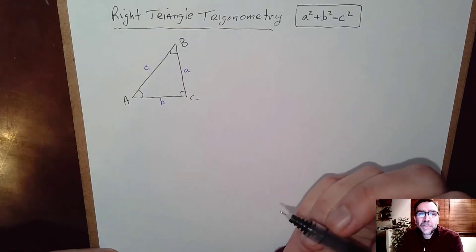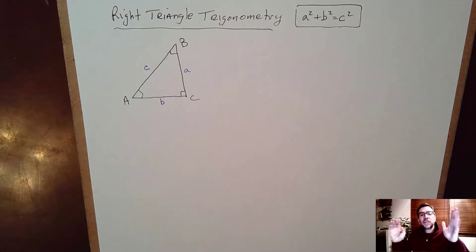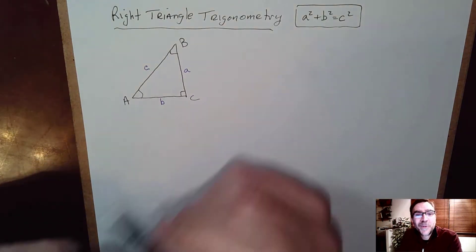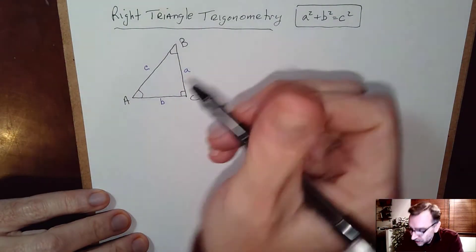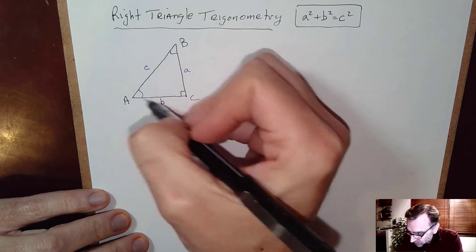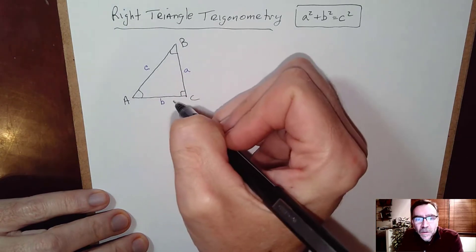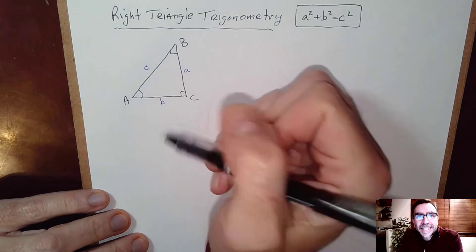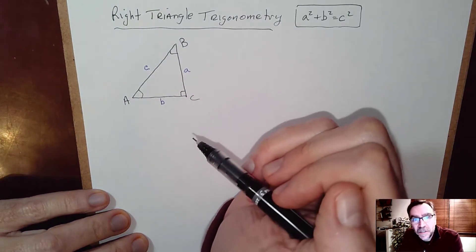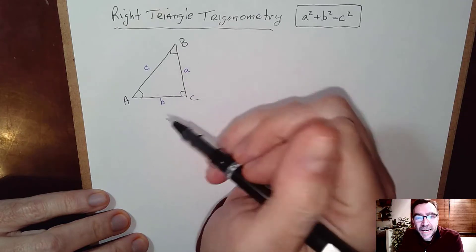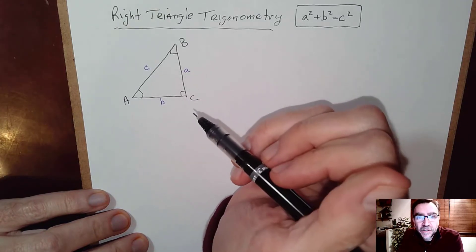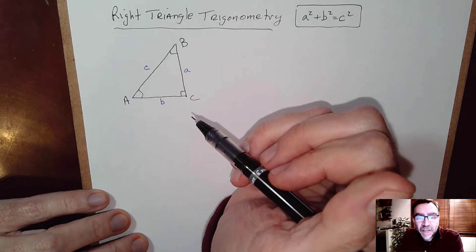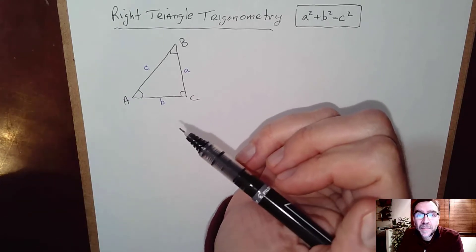Here we're going to define right triangle trigonometry. This is one of our most important sections, section 1.3. Given a right triangle ABC, you can create six possible ratios between the sides and legs of this right triangle, and these six ratios are named.